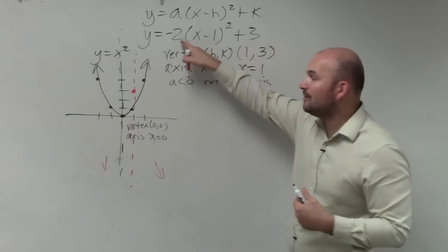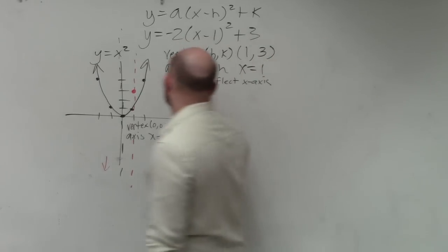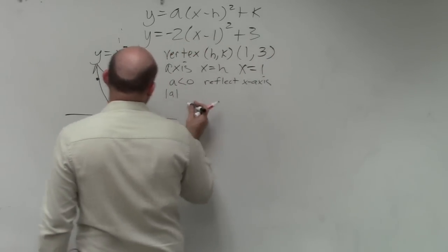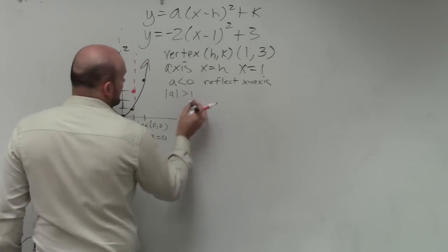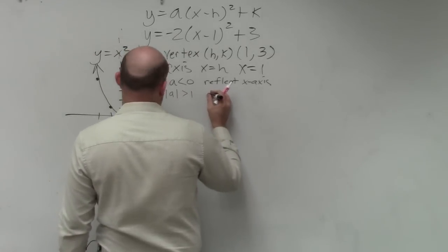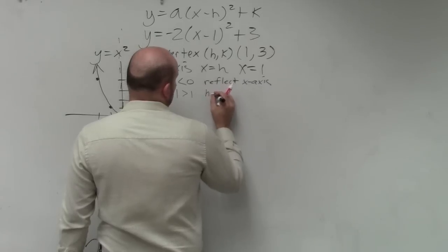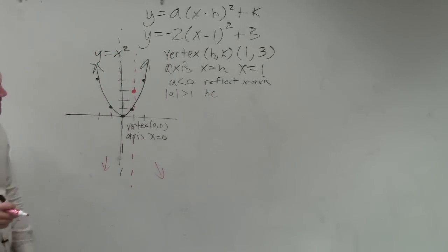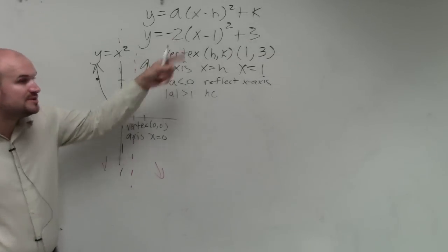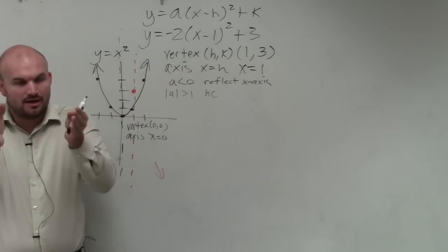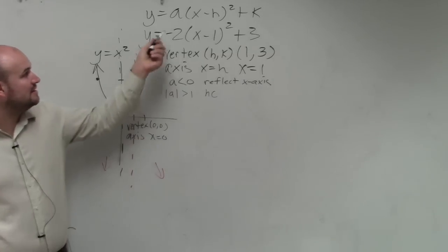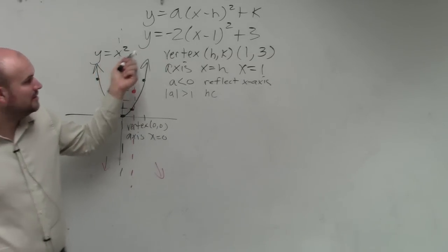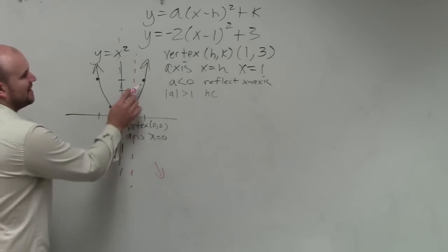However, now I'm multiplying it by 2, I have a compression. And if you guys remember, when the absolute value of a is greater than 1, you have a horizontal compression. I'll just write it as hc to save some time. So basically what that's doing is all that number 2 is doing is when you go over 1, when you plug in your x, then you have to multiply that by 2.